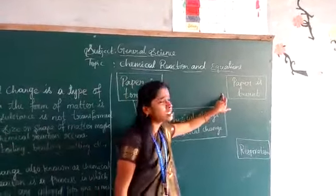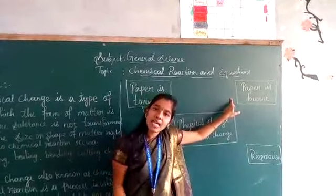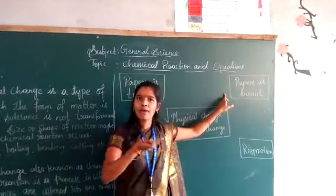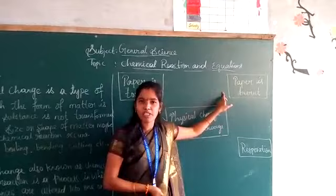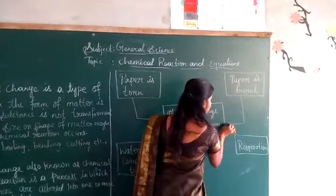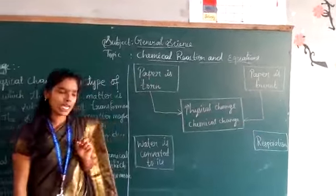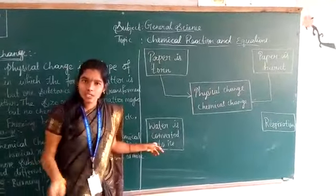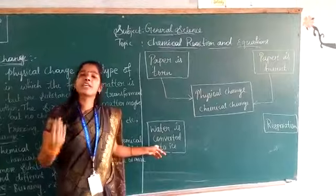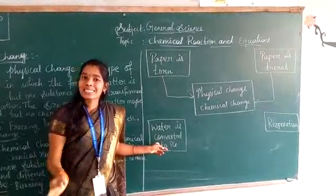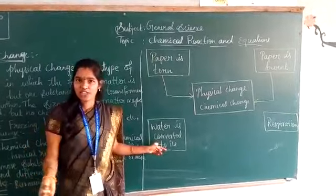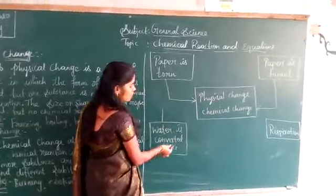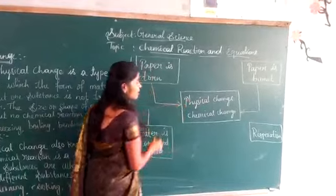Paper is burnt: if you burn the paper it becomes ash and smoke, so entirely new substances are formed — paper and ash are different. Therefore, paper being burnt is an example of chemical change. Water converted to ice: if you melt it, it becomes water again, so only the state of matter changes. Water converted to ice is an example of physical change.